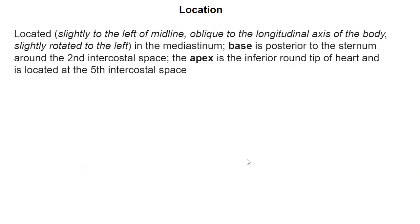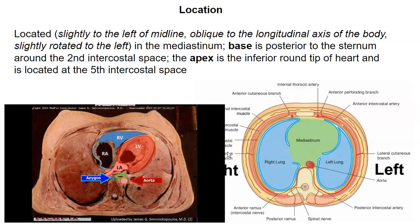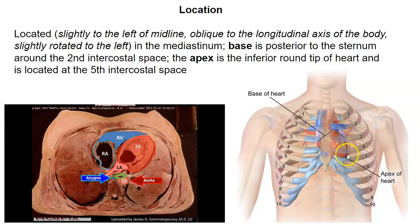The location of the heart: it's located in the mediastinum, which is one of those cavities that sits inside the thoracic cavity between the two lungs. The mediastinum houses the heart in addition to the trachea and the esophagus. Here is a transverse cross-section of a cadaver — you can see that the heart does lie a little bit to the left of the midline. The heart is also oblique to the longitudinal axis of the body, so it doesn't run straight up and down; it runs to the side. The heart is also rotated slightly to the left.